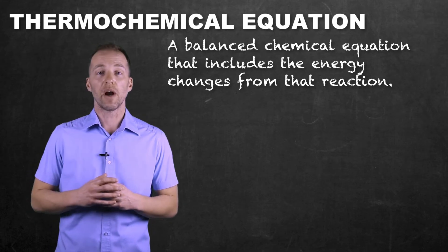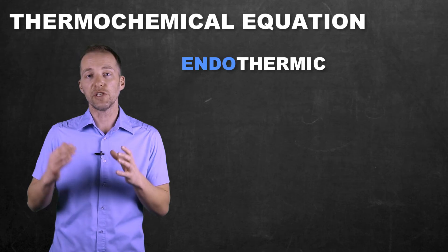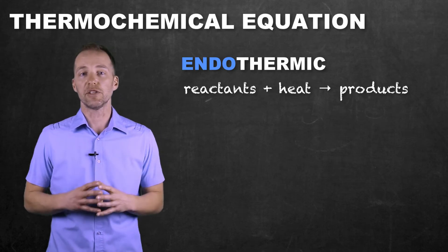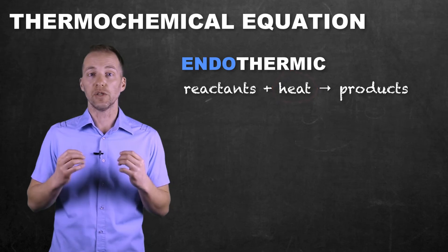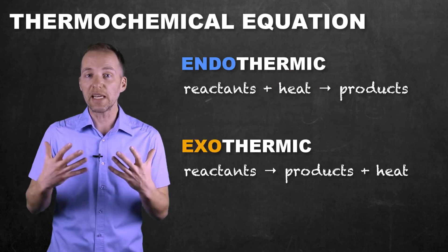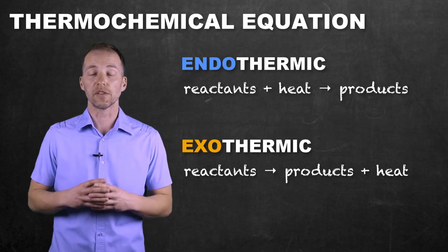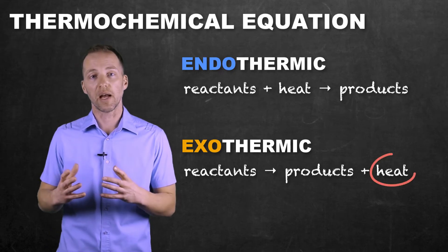So for an endothermic process where energy is put in, we see this energy included on the reactant side. For an exothermic reaction in which energy is going to be released or produced as a result of this chemical reaction, we're going to see it on the product side.